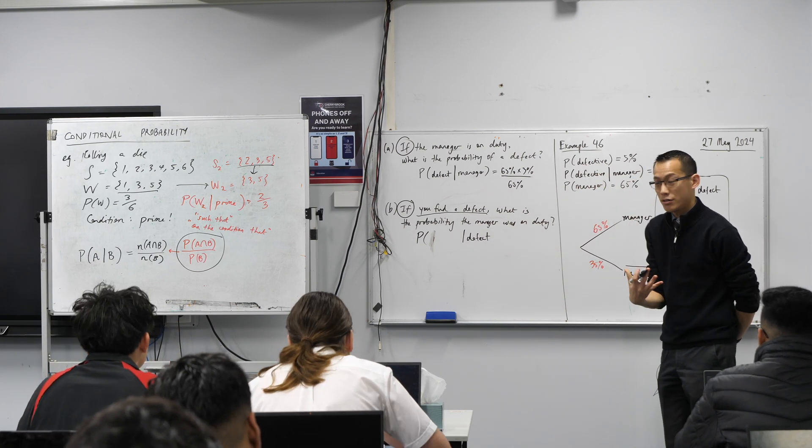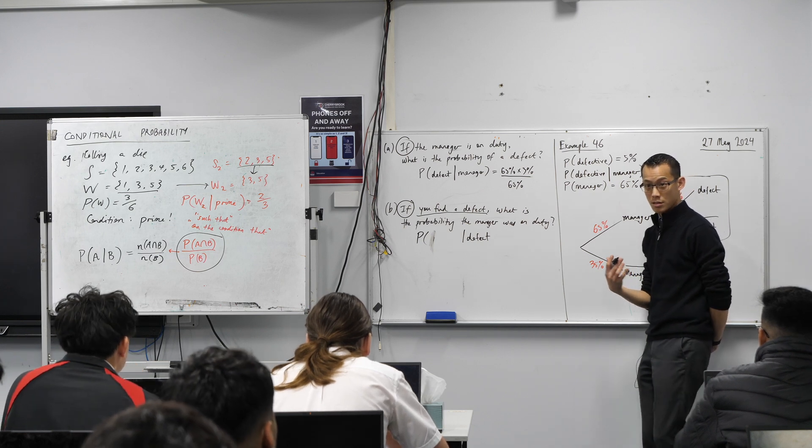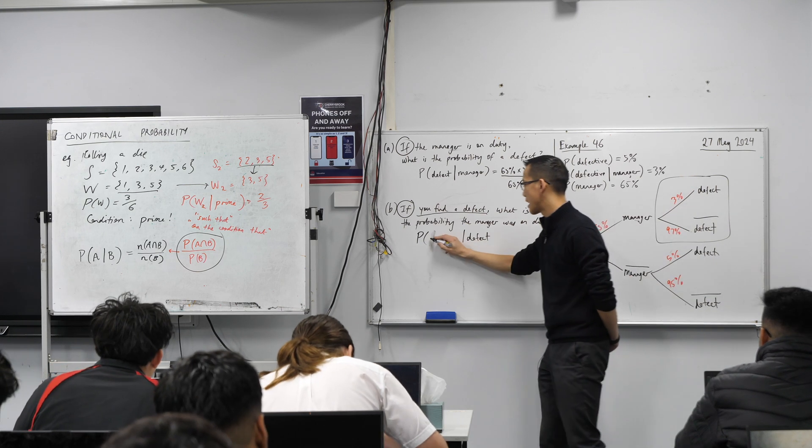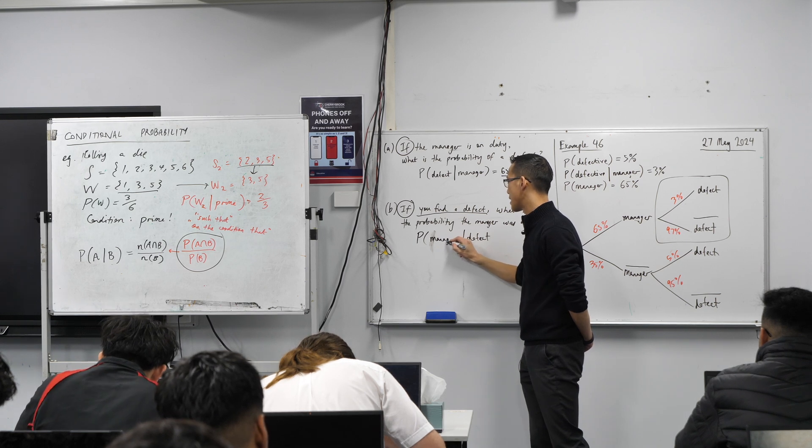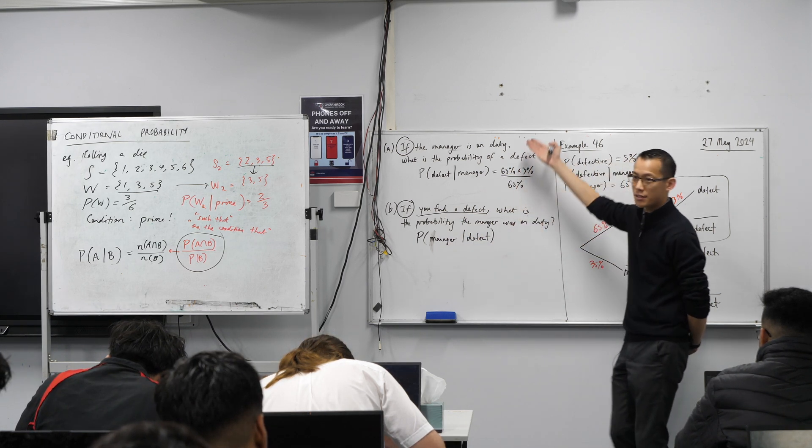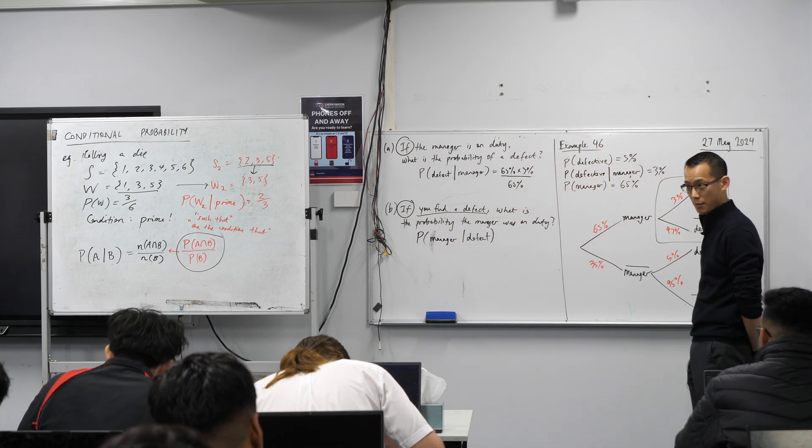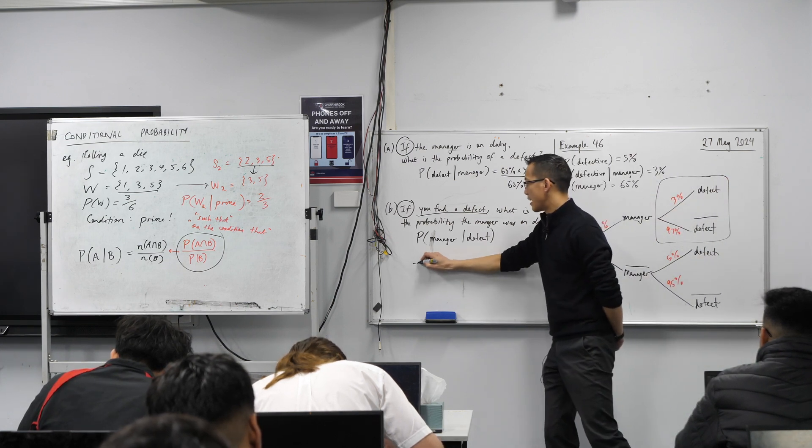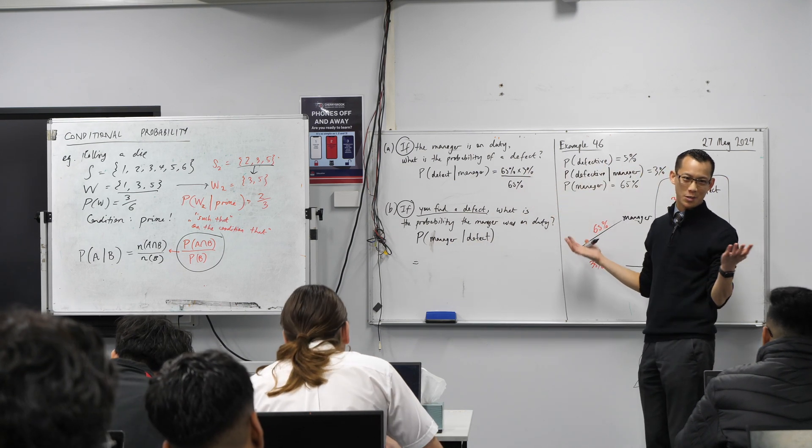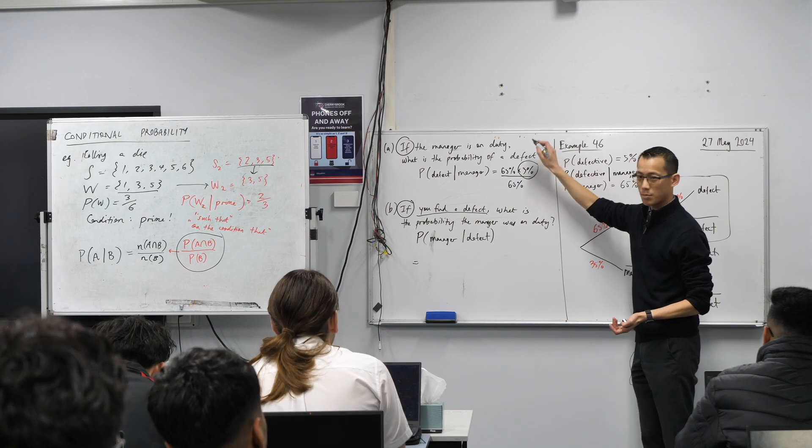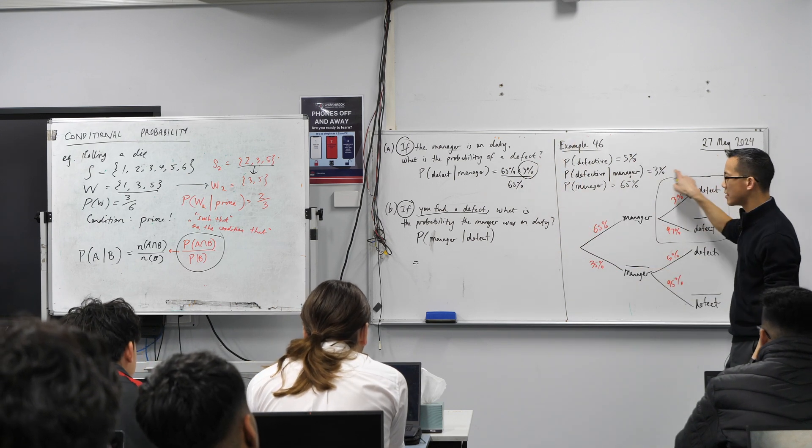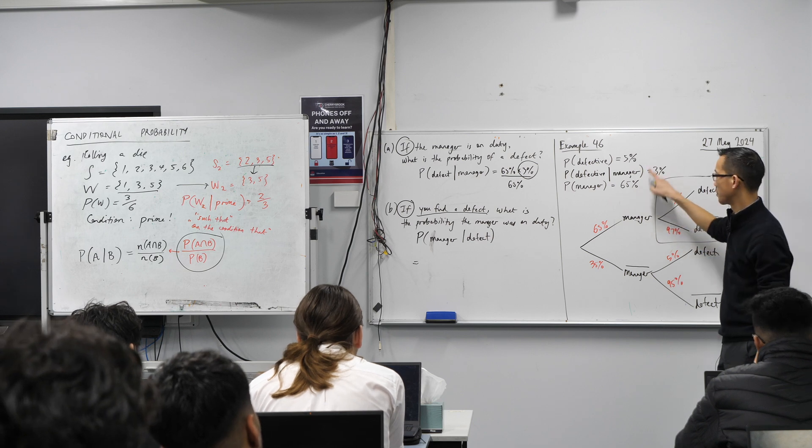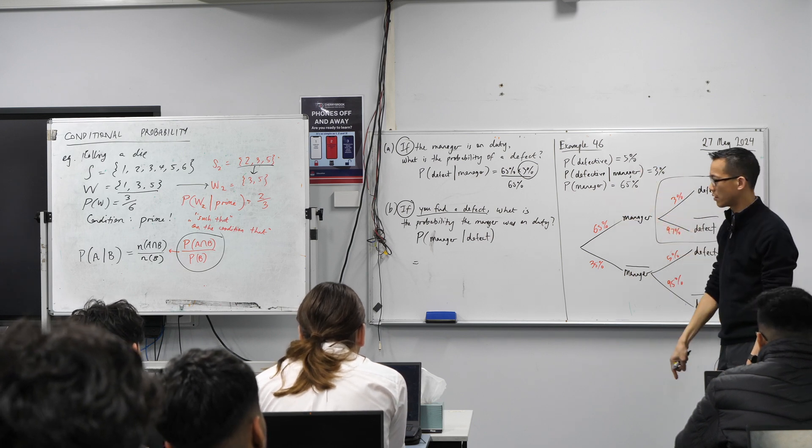But actually this kind of thing happens all the time. This is more normal than the other situation because we don't know what's happening in the factory. So I'm going to write, the condition is that there's a defect, right? The favorable event, the thing I'm actually interested in is, was the manager there? So that's actually the thing, that's the A, that's the thing that comes first. And that's why it's just a reversal of what we looked at before.